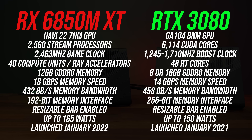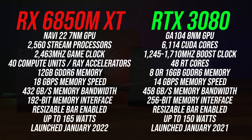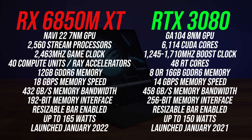These are the specs of both of these laptop GPUs. Stream processors and CUDA cores aren't directly comparable, but the 3080 has more memory with a larger memory bus and more bandwidth. The 3080 is also available with an 8 gig option, but we've got the 16 gig one here, so in this case it's got more VRAM compared to the 12 gigs available to the 6850M XT.